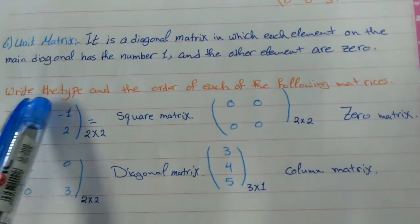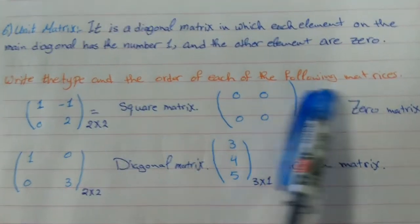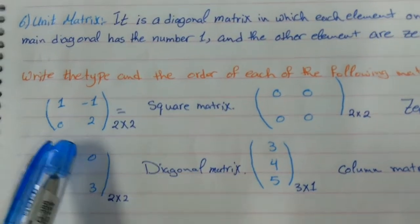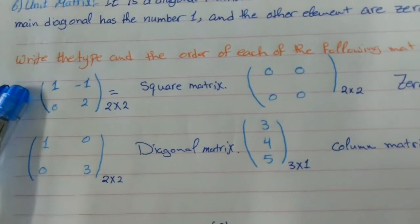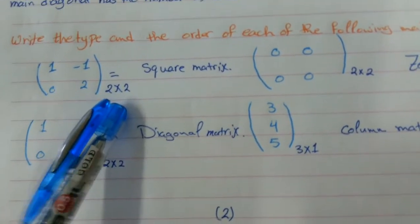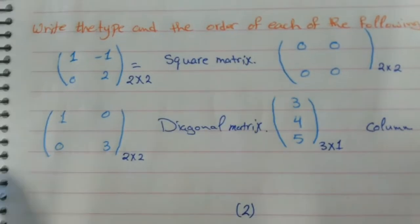The example for this, write the type and the order of each of the following matrices. I want you to know the type because we say that we have the special matrices. Here, this matrix is 2 times 2, right? It's order. So this is called what? Square matrix.